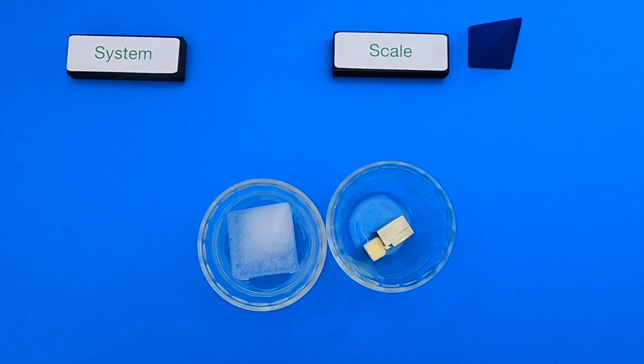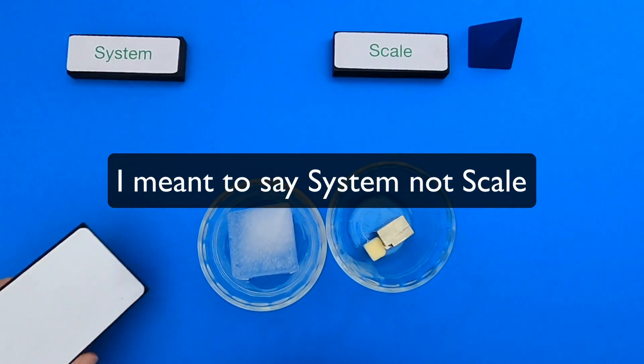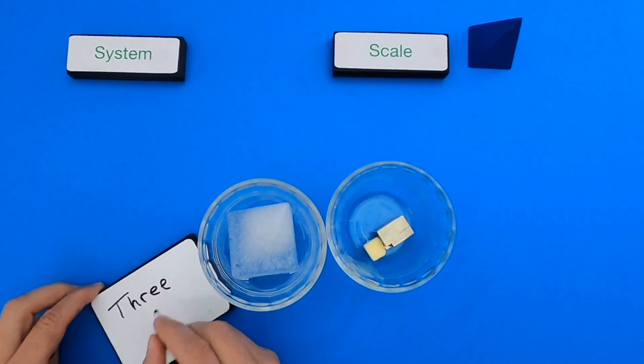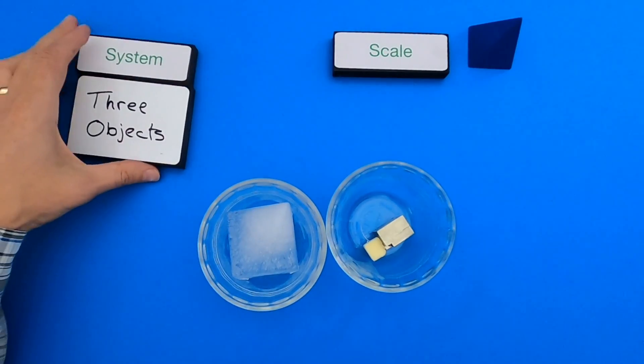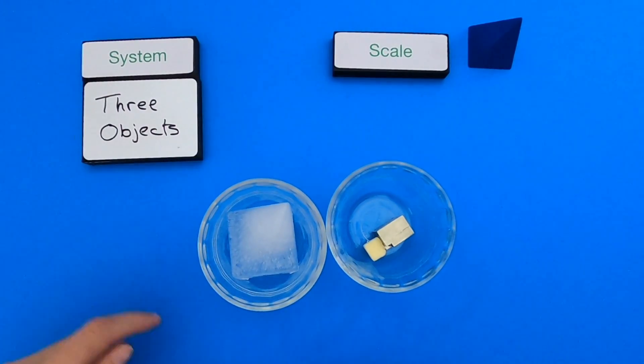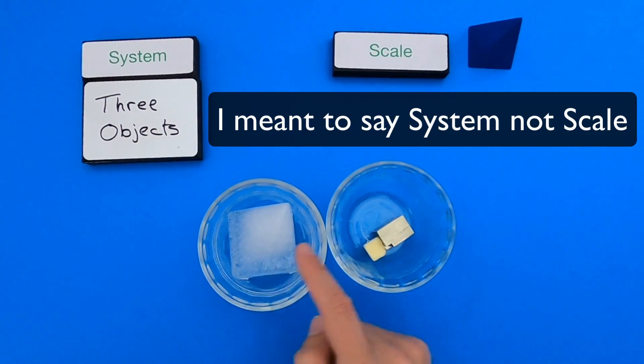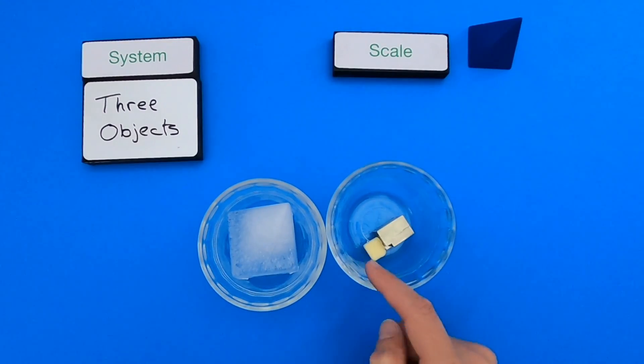Okay, when you're talking about scale, the first thing you want to do is define the scale that we're actually investigating. So I've defined the scale as these three objects, the ice, the metal, and the butter. Let's look at them a little bit more carefully.